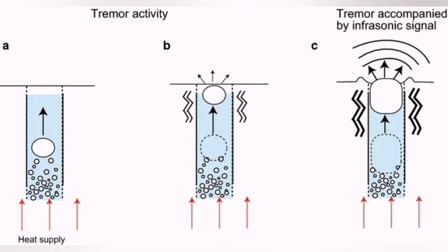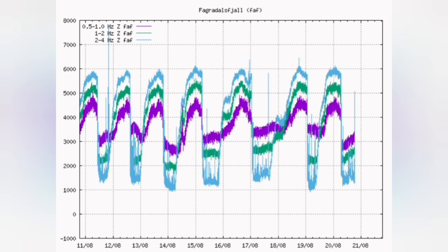And that seismogram practically shows us what happened. Those different lines, the green and the purple and blue, show the different sizes of the bursts and bubbles.